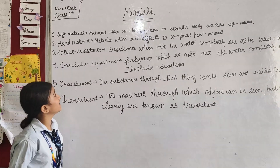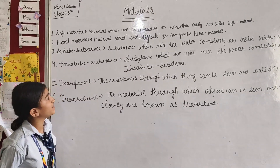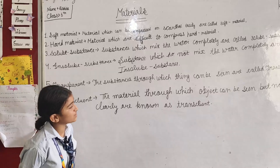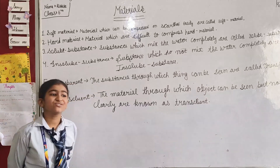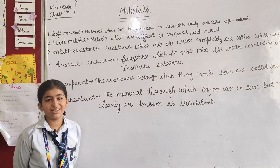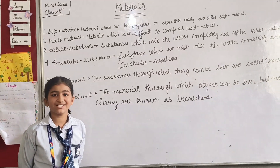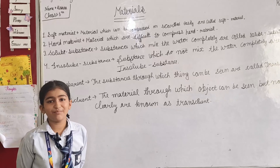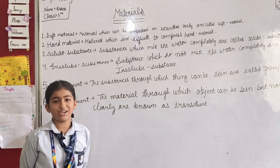First is soft materials. Materials which can be compressed or scratched easily are called soft materials. For example, cotton and sponge.